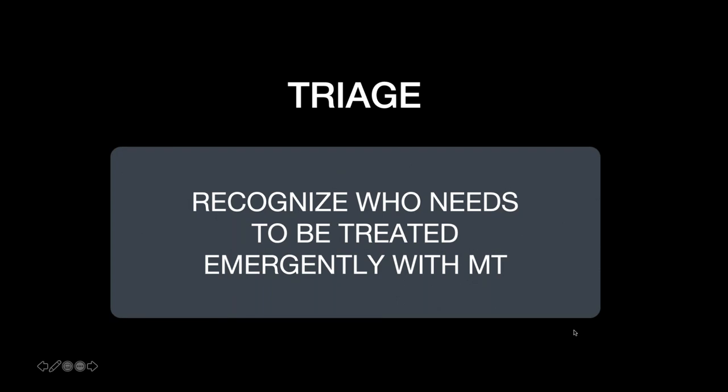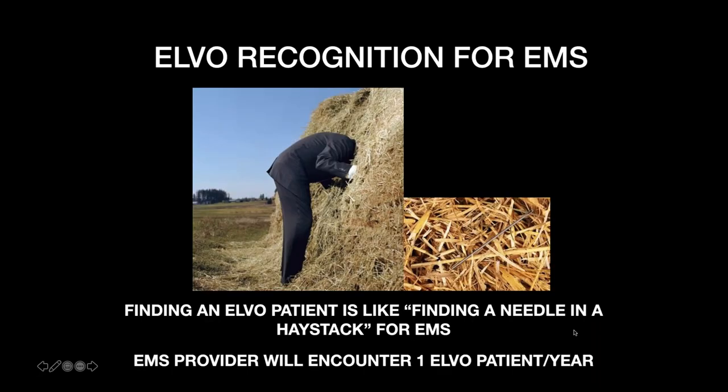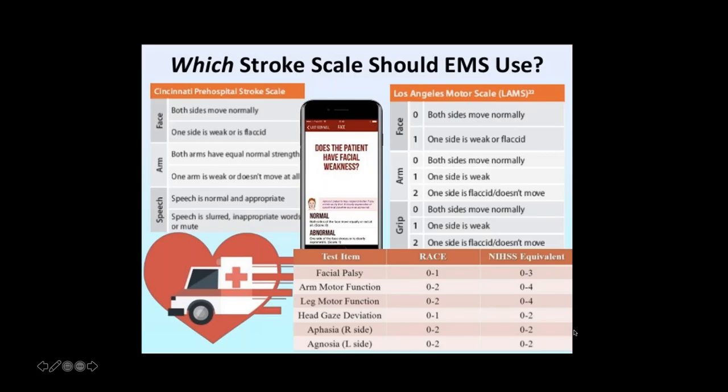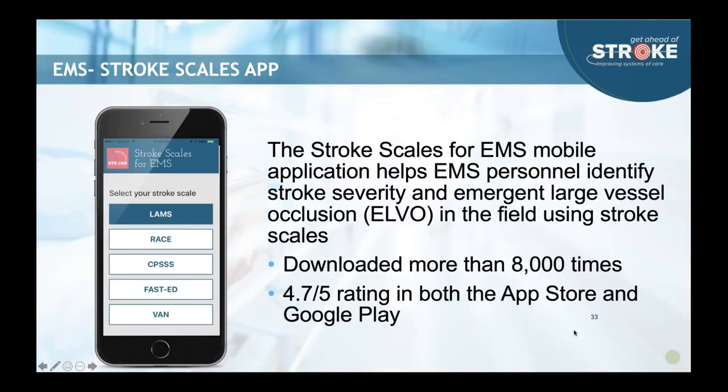Recognizing emergent large vessel occlusion (LVO) patients at the EMS level is really important and often difficult — like finding a needle in a haystack. If you look at EMS providers across all their calls in a year, they probably only encounter one true positive LVO patient per year. Getting them prepared with all the stroke screening tools for that one patient is difficult. We've been using technology to help — there are now a number of LVO-specific stroke screening scores available on apps, so EMS providers can have them at their fingertips.